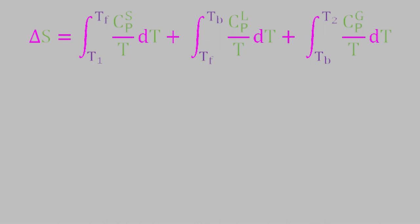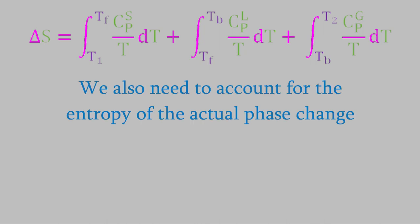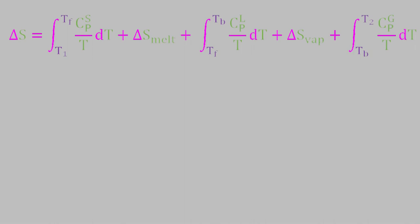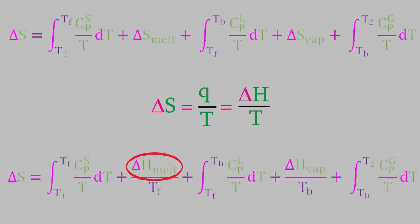However, even this equation leaves out something important. When the phase changes, we're not just changing the temperature — we're also disrupting the intermolecular forces between the molecules, and that process has an entropy. So, if the temperature is increasing, we'll have to include the entropy for the melting process and also the entropy for the vaporization. Using the Gibbs definition of entropy, the entropy of each phase change equals the heat gained or lost during the phase change divided by the temperature. Since the system is at constant pressure, that means the heat change is the enthalpy change, so we have ΔH for melting and ΔH for vaporization, each divided by the temperature at which they occur.